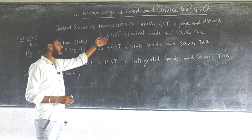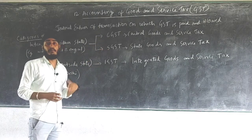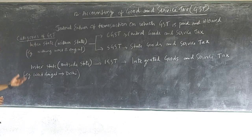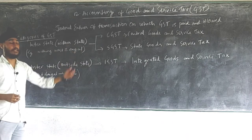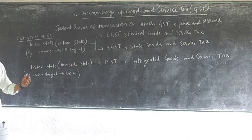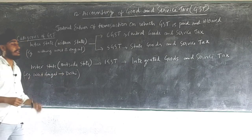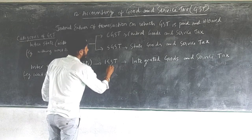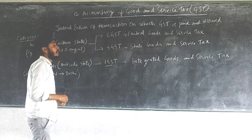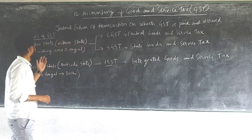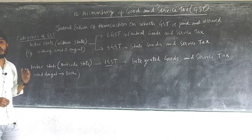Whenever purchase and sale are within the state — suppose within West Bengal or within Delhi — there will be two types of tax: CGST and SGST. Rates will be given to you in questions. Next, if purchase and sale takes place inter-state, that is outside the state — suppose from West Bengal to Delhi or Delhi to West Bengal — then only one tax is paid: IGST, that is Integrated Goods and Service Tax.